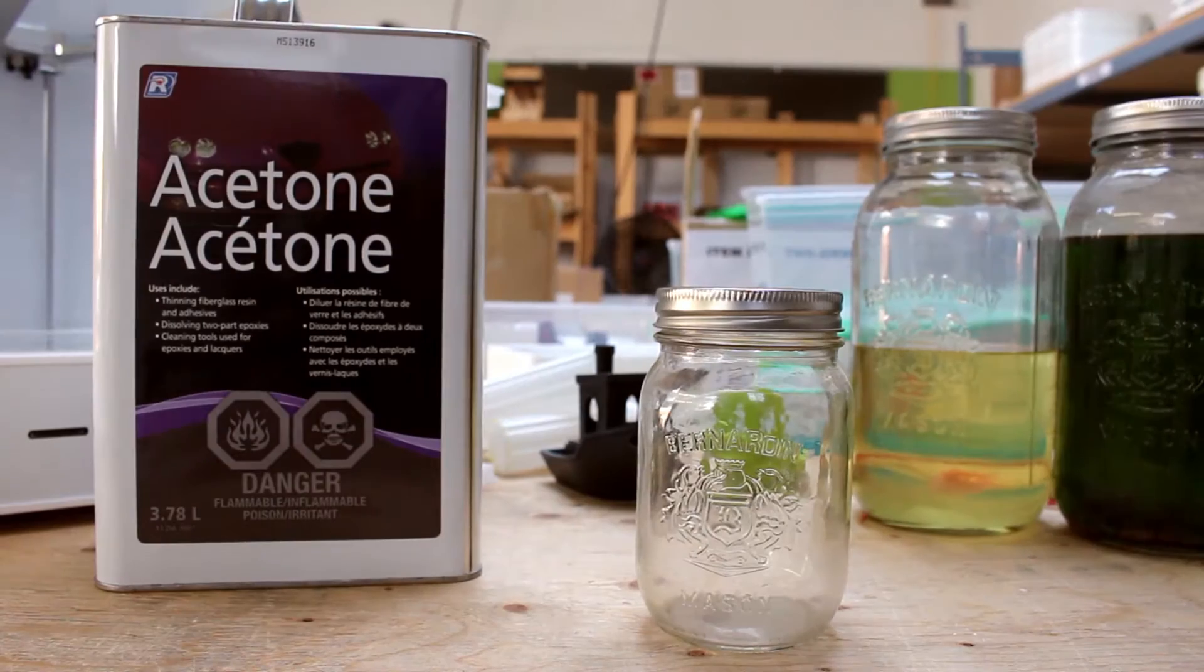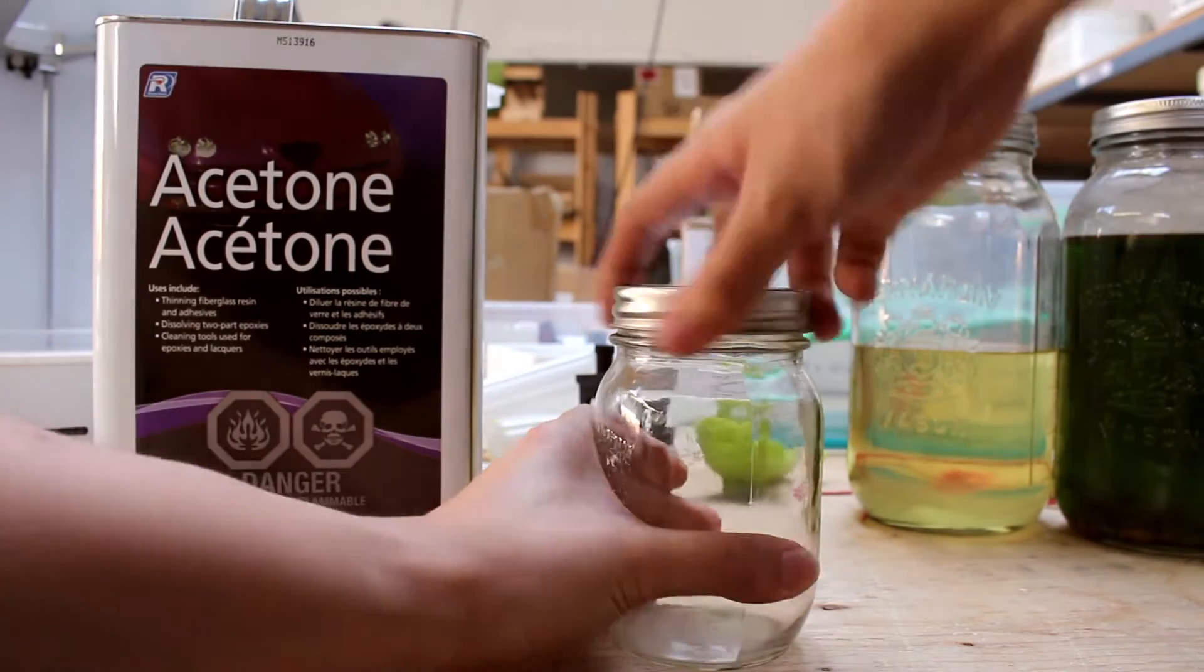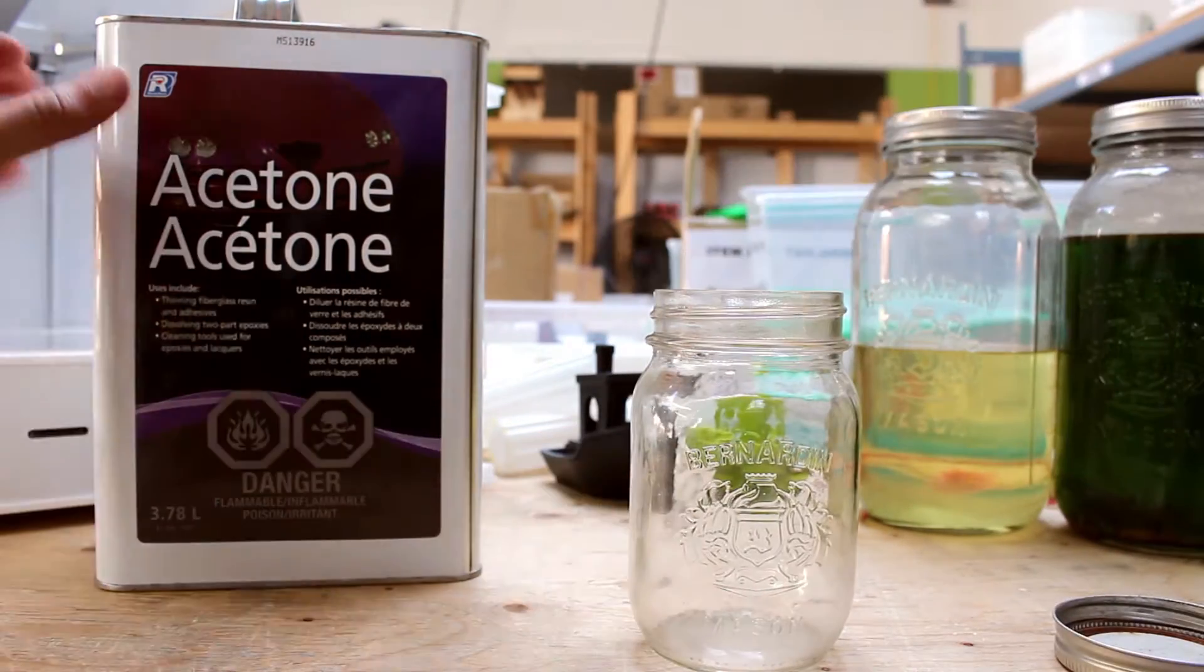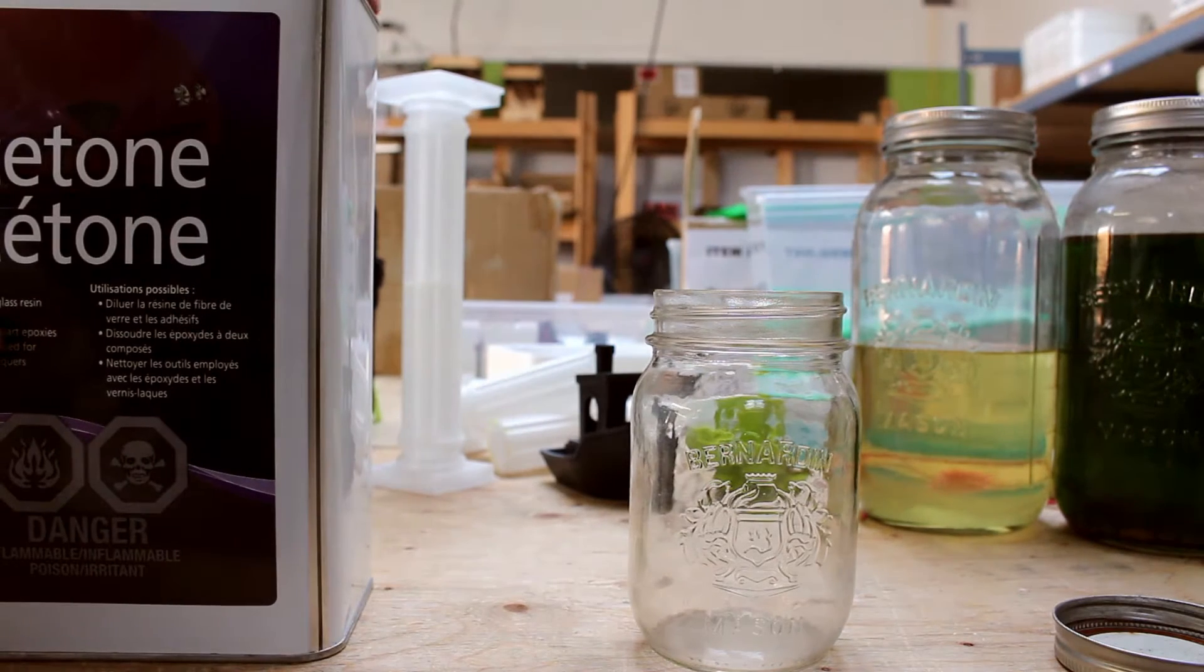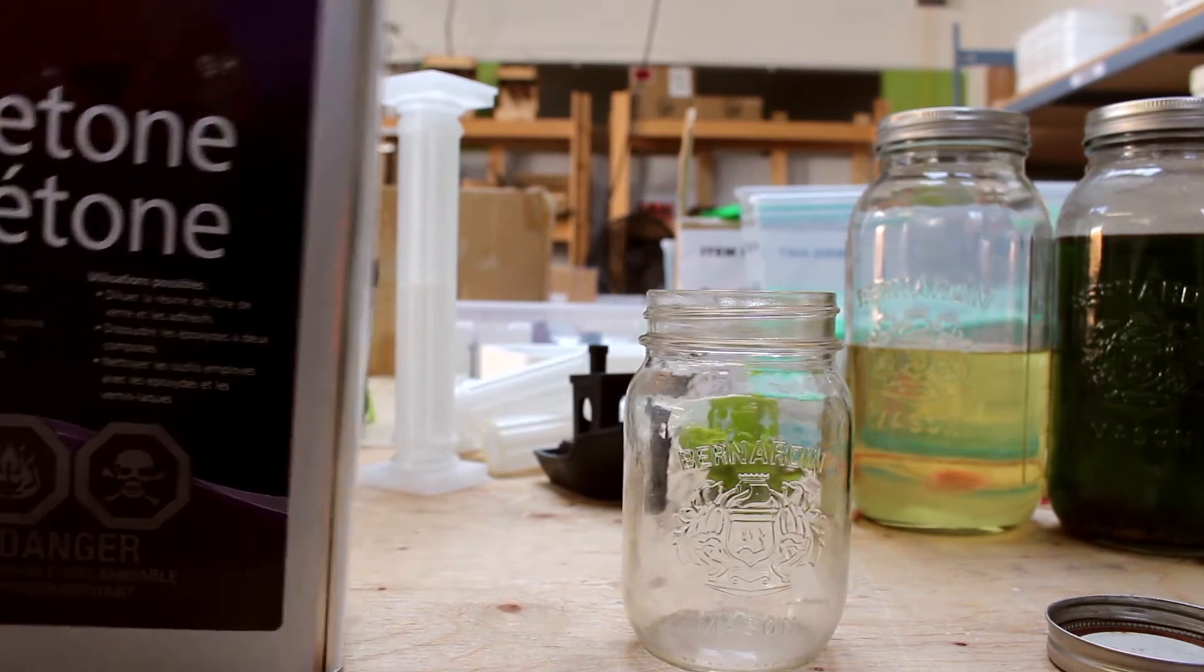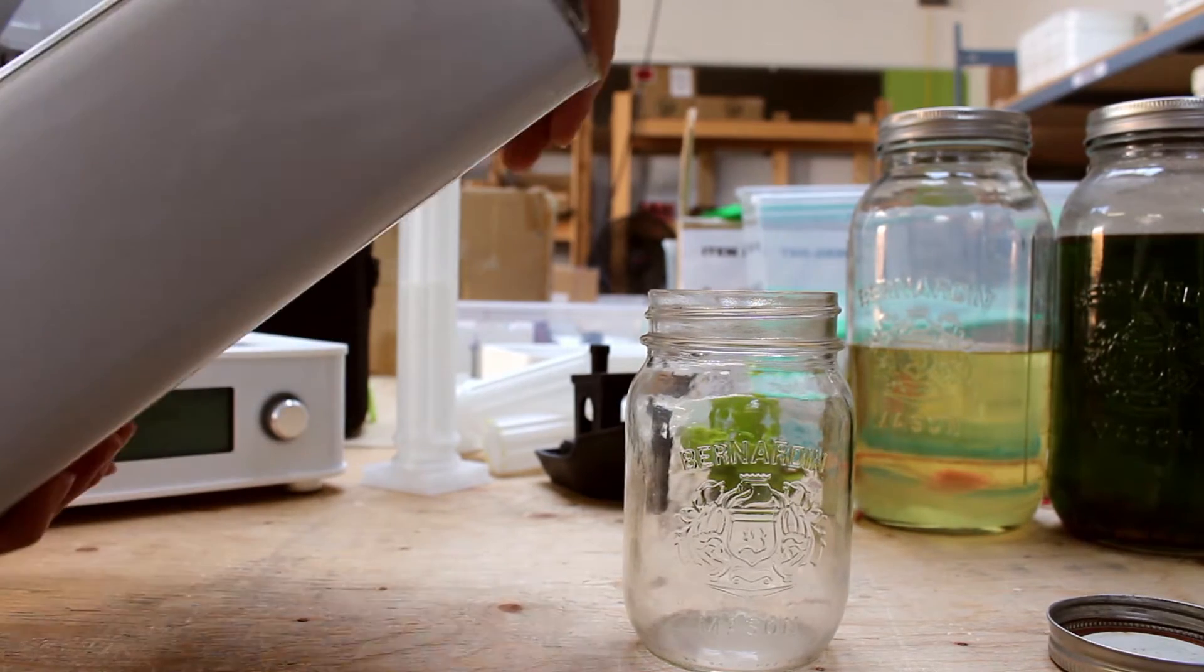To make ABS sludge, you would need ABS, acetone, a glass jar and a protective mask. You don't want to inhale the toxic fumes from acetone or ABS. I have a mason jar here but you can use any glass jar you find as long as you don't plan to put anything edible in it afterwards.